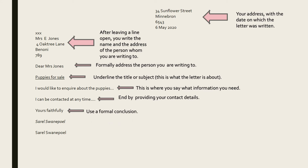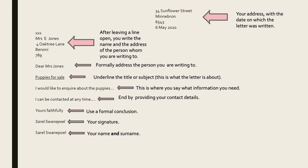For formal letters, you have some options that you can use as a formal conclusion — for instance, 'yours faithfully,' 'sincerely yours,' or 'kind regards.' Now, here comes a difference between a formal letter and a friendly letter. For a formal letter, you have to put your signature, followed by your name and surname. In a friendly letter, however, your signature and surname are not required — only your name or a nickname. But for a formal letter, unfortunately, you need to have all of these things.